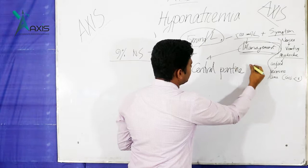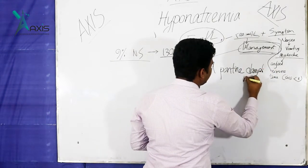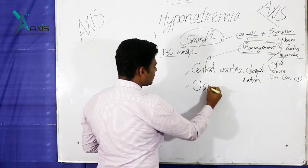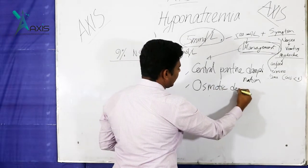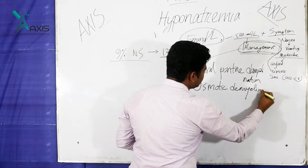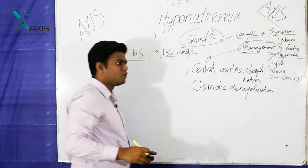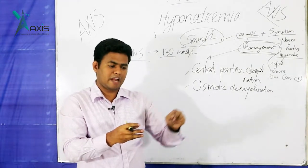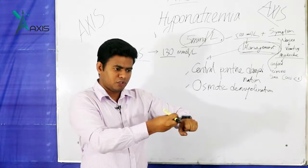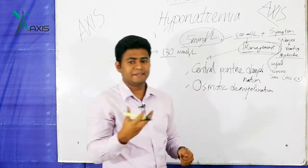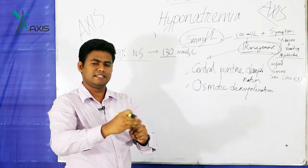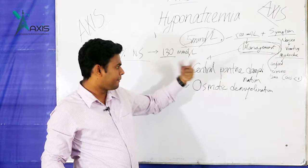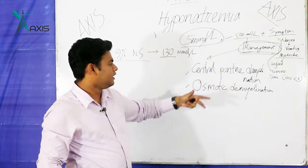Why must we be cautious? There is a condition called osmotic demyelination syndrome, also known as pontine demyelination. If sodium is corrected too rapidly, the central nervous system cannot adapt — water moves out of cells rapidly. This causes osmotic demyelination, damaging the nerves, especially in the pontine region. This leads to quadriparesis or quadriplegia.